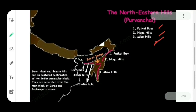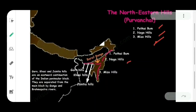If you understand the names, you will understand from the map as well. Patkai Bum is situated in Arunachal Pradesh. Naga Hills — as the name suggests — is in Nagaland. And Mizo Hills is situated completely in Mizoram. Now we will see each mountain range in detail, starting with the first mountain range: the Karakoram Range.